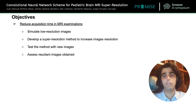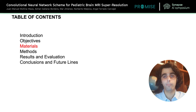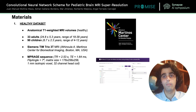Firstly, we simulate the low resolution images to build our super resolution method based on convolutional neural networks, and then we evaluate our method with new images that were not used for training. Here we have the pipeline of this work — on the left there is the low resolution image and with the aid of the super resolution method we attempt to recover the original resolution that is shown on the right image.